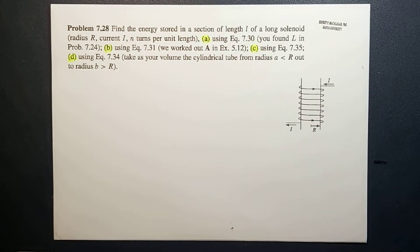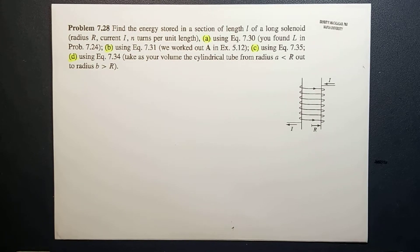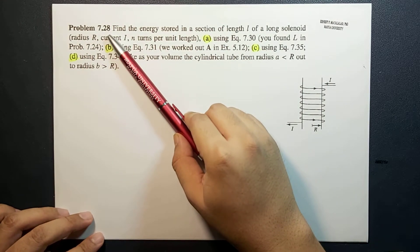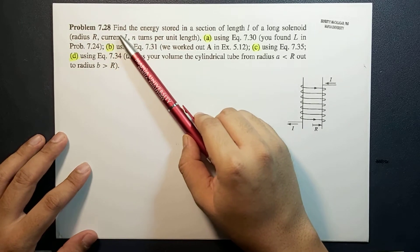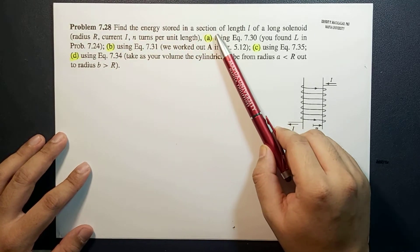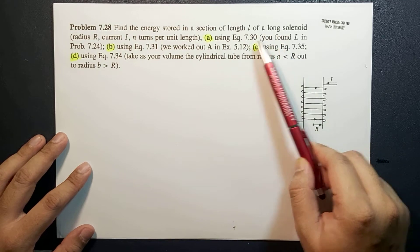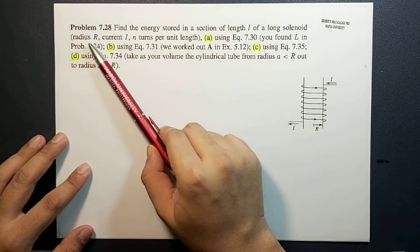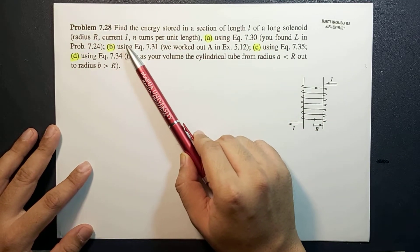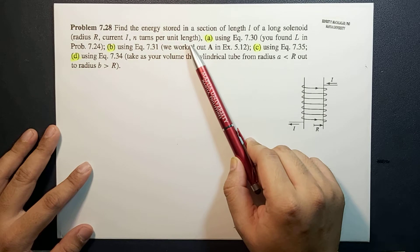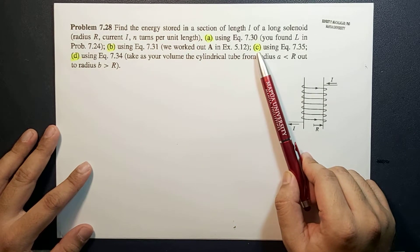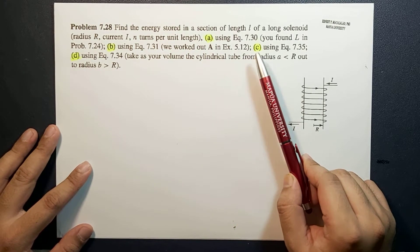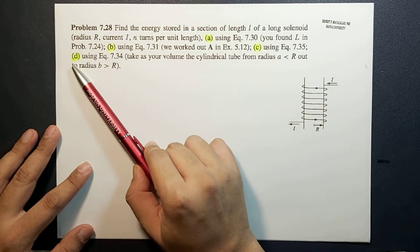What's up guys, it's me Sir Ernest and today we will continue solving problem 7.28 of Griffith's fourth edition. The problem reads: find the energy stored in a section of length L of a long solenoid of radius R, current I, and turns per unit length. This time we're going to solve part C.